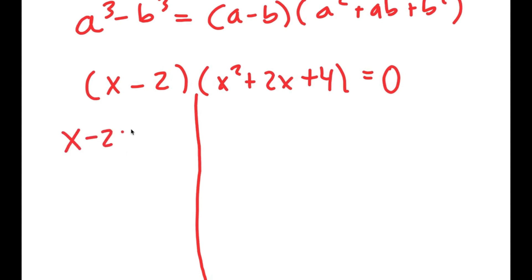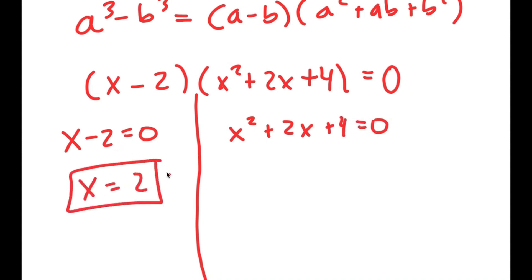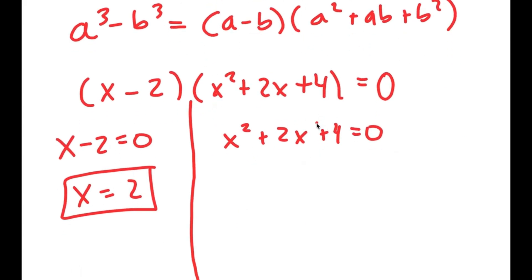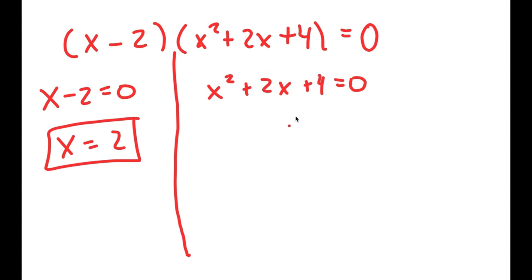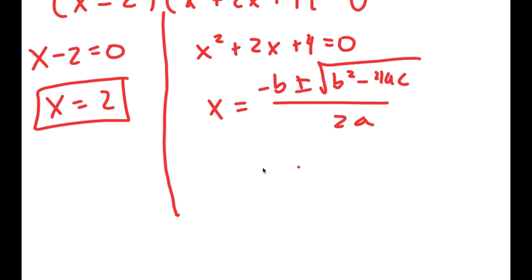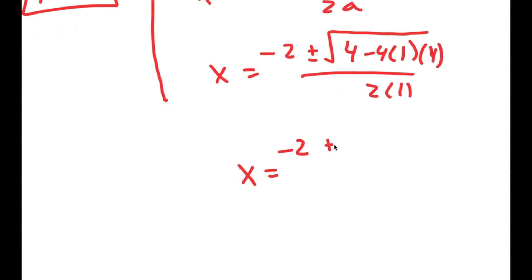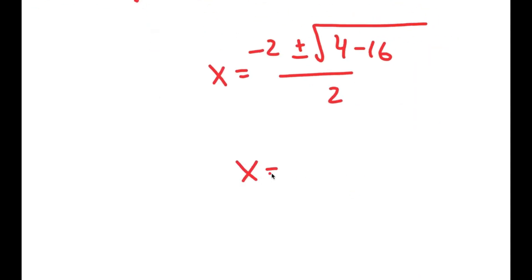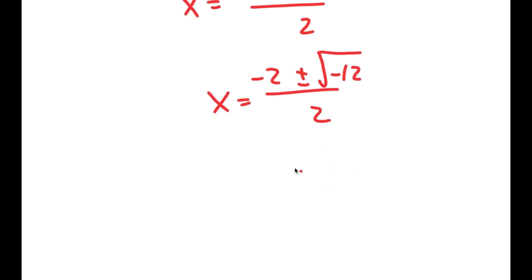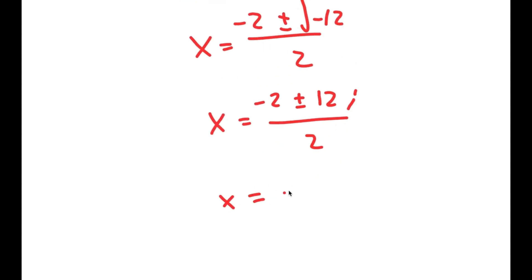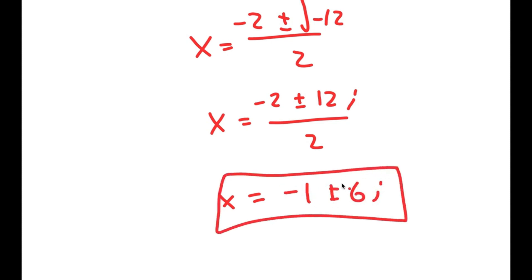Now I get two equations: x minus 2 equals 0, and x squared plus 2x plus 4 equals 0. For x minus 2 equals 0, x equals 2, which we already found. But on top of this, we have a whole other equation with two more solutions. Using the quadratic formula, I get negative 2 plus or minus the square root of (4 minus 4 times 1 times 4) all over 2 times 1. This gives negative 2 plus or minus the square root of negative 12 over 2, which equals negative 2 plus or minus 2i√3 over 2, giving x equals negative 1 plus or minus i√3. These are the two additional solutions to this equation.